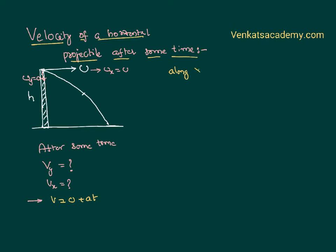Along x-axis, V = u + at. So Vx = ux + ax·t. Since ux is u and there is no acceleration along x-axis, the velocity of the projectile along x-axis remains constant.